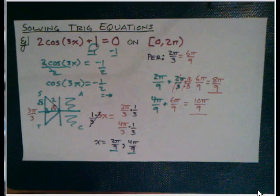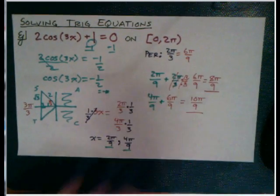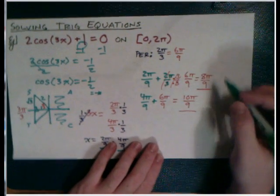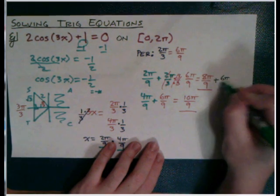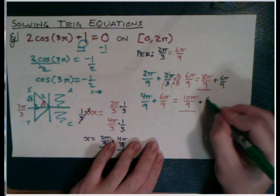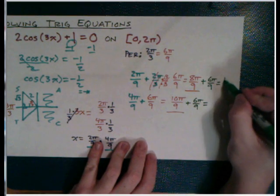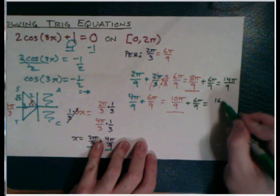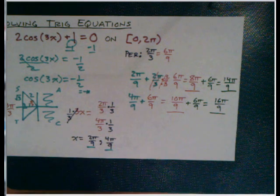We still need six. The way we do that is once again, we go and we add another period because this thing is going to repeat three times on this interval, 0 to 2 pi. We need to account for all of it. So here we go. Plus another period. Plus another period. That's going to give me 14 pi over 9. And 16 pi over 9. So after all that work, I end up with six total solutions.